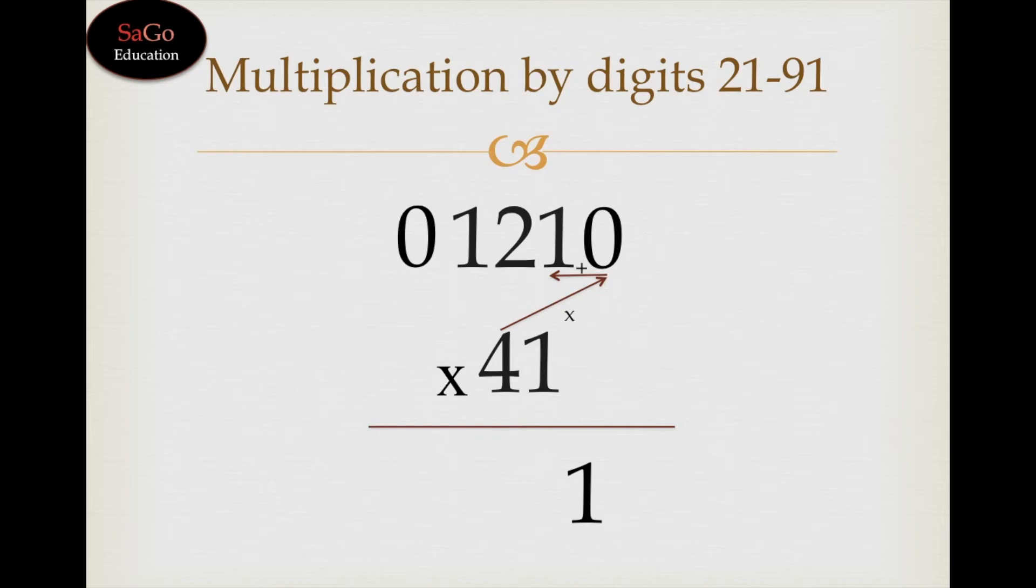Again the same pattern. 4 times 1 is 4, plus 2 makes 6. Write 6. Again the same pattern. 4 times 2 is 8, plus 1 makes 9. Write 9.